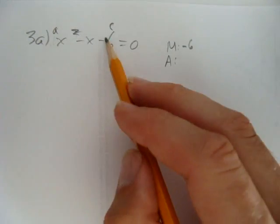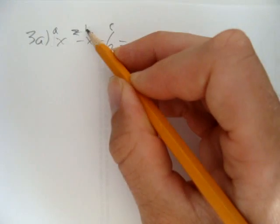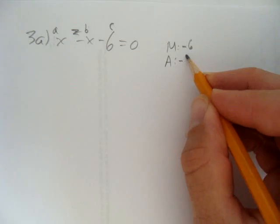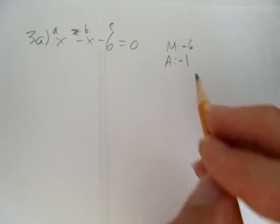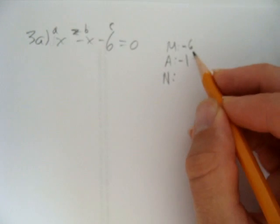So what multiplies to a times c, that's negative 6, and adds to the coefficient of x? In this case, since there's no number but there's a negative, it's understood that the coefficient is negative 1. So we want to think about what multiplies to negative 6 but adds to negative 1.